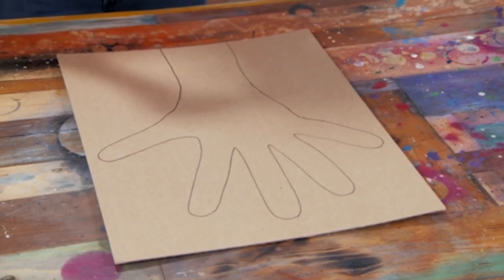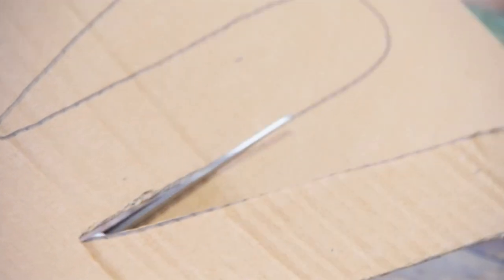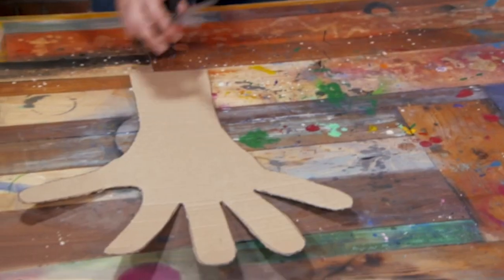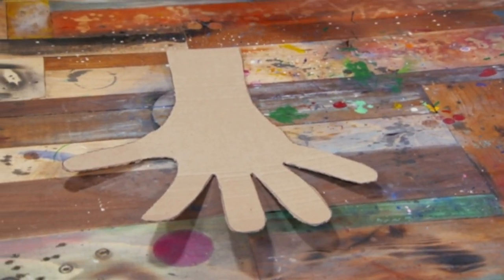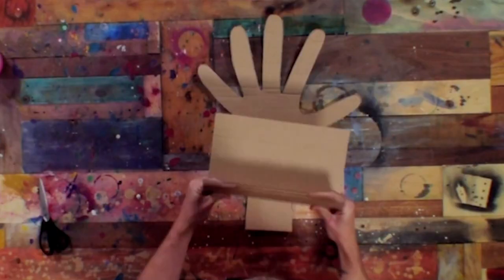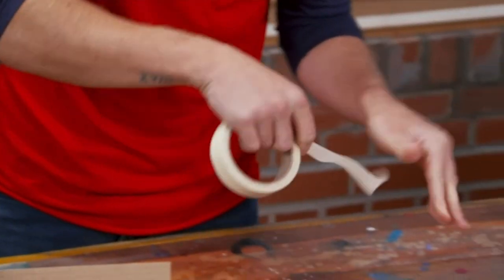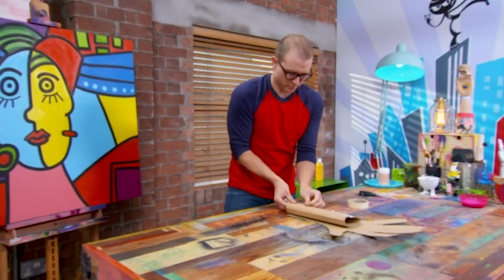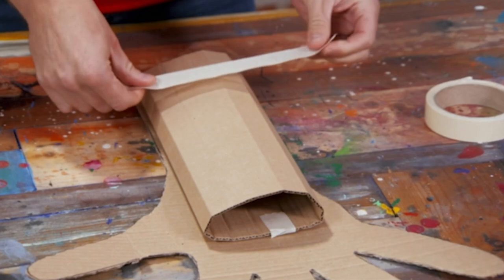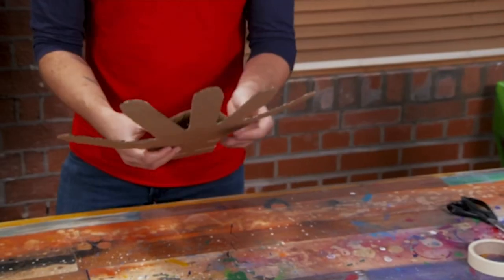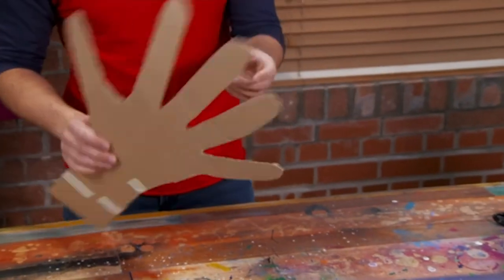We cut that out, looking pretty good. I need a strap so I can wear the hand, so I'm going to make that by rolling up a piece of corrugated cardboard and hold that together with some masking tape. And another one.